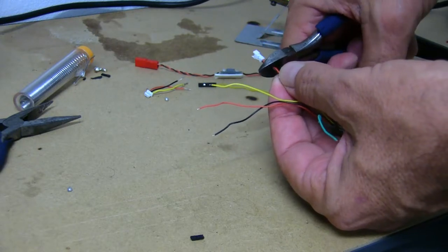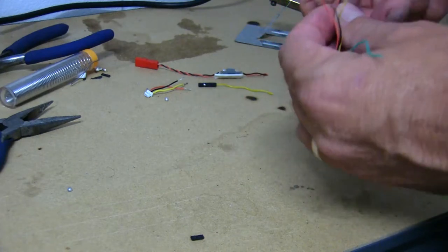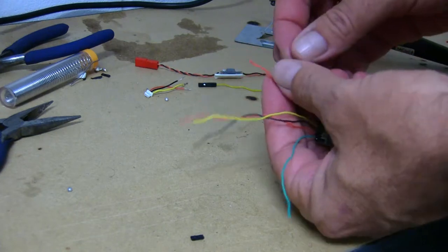So I'll just cut this cable off this plug. We don't need that. Then we'll just tin up our wires.